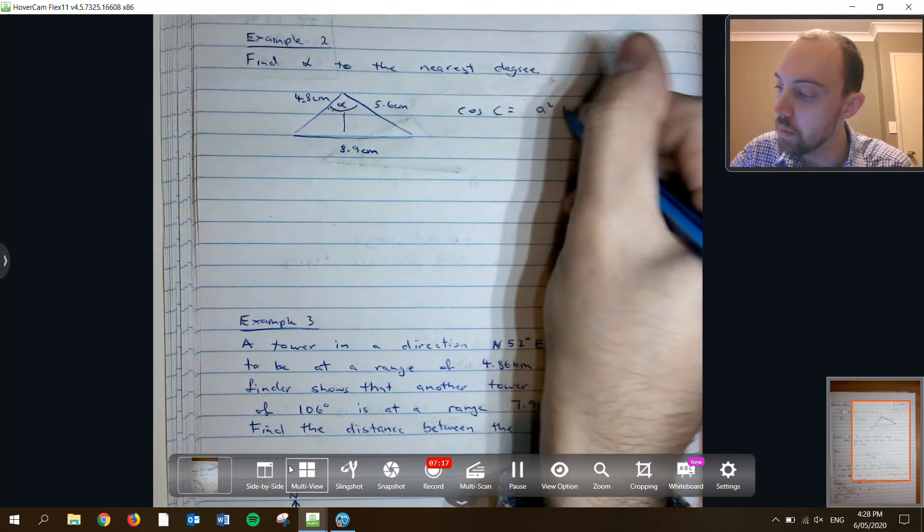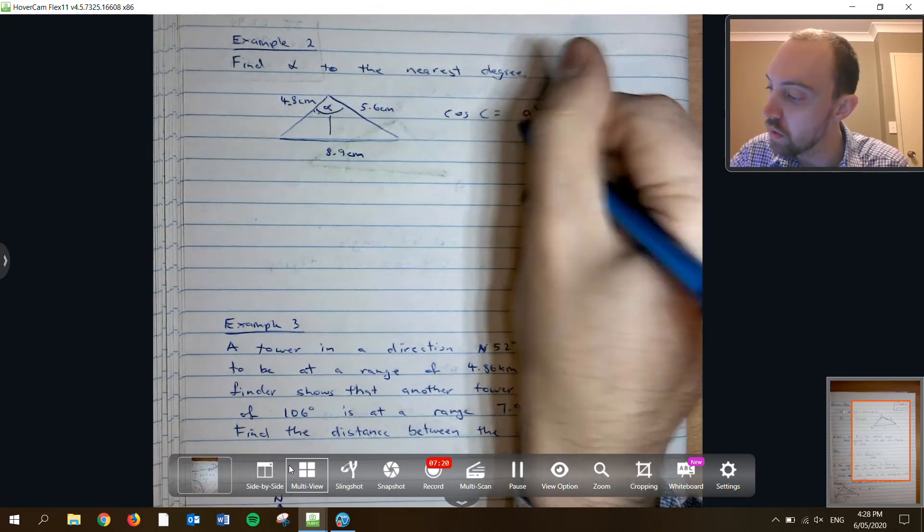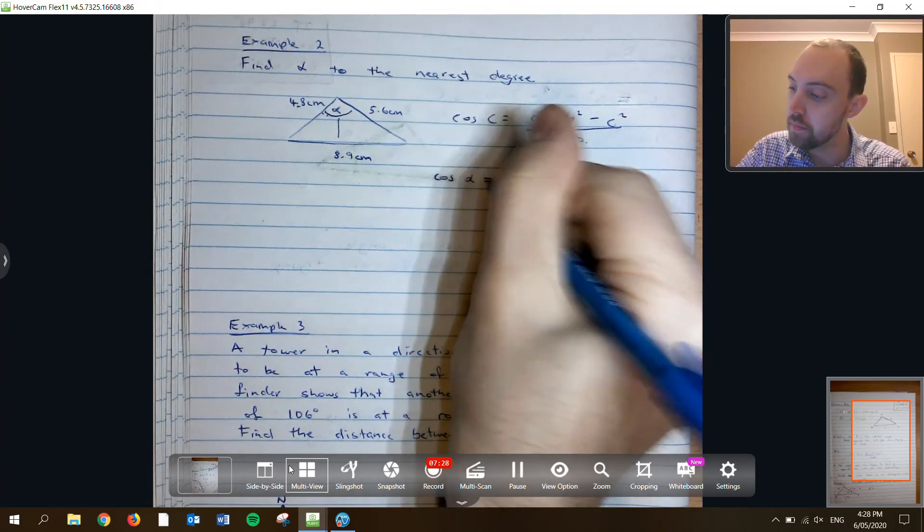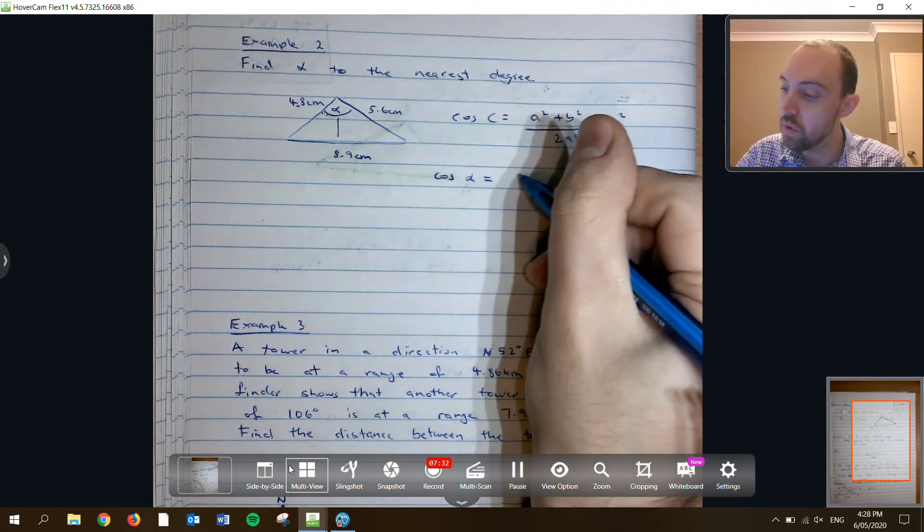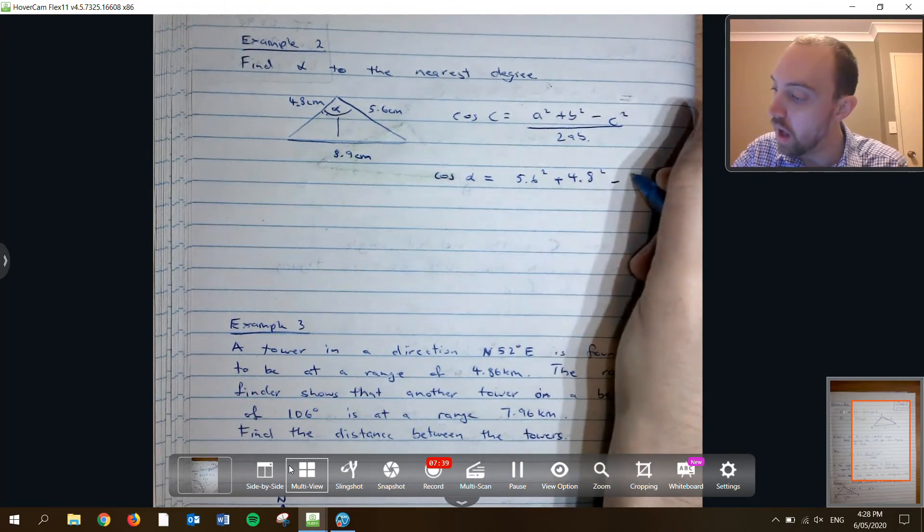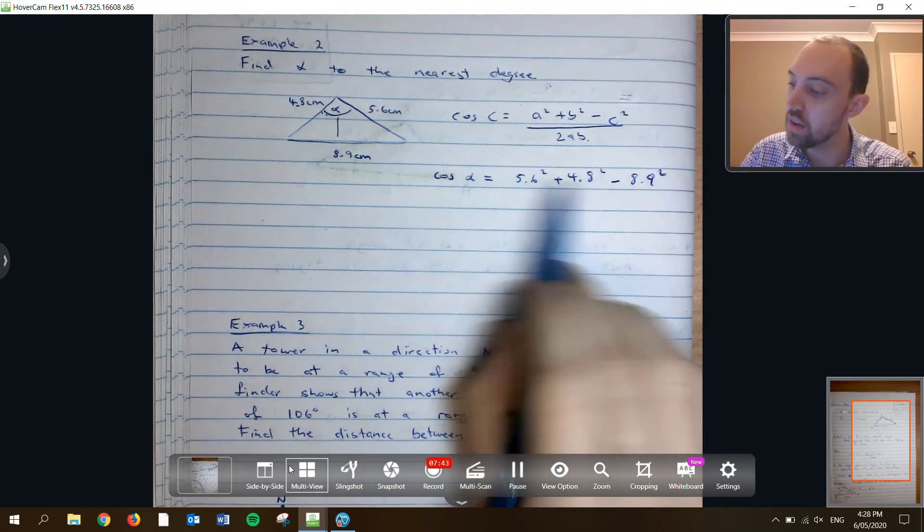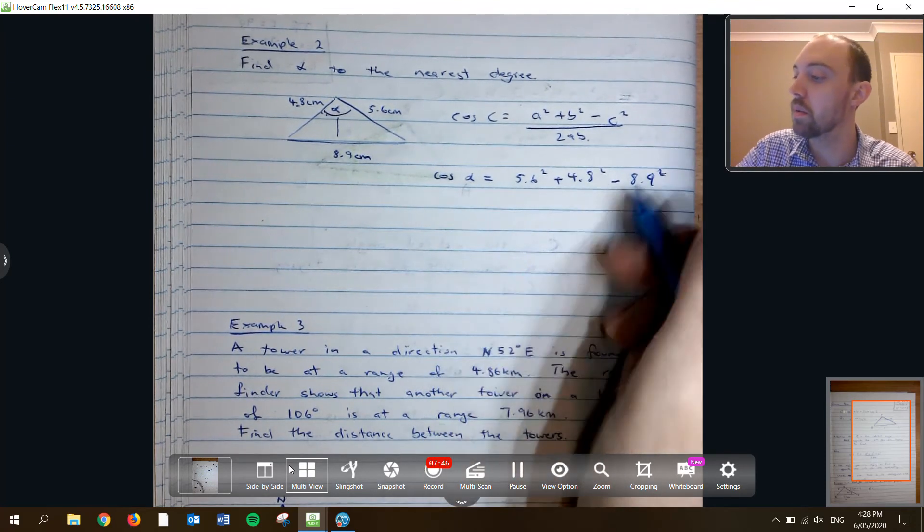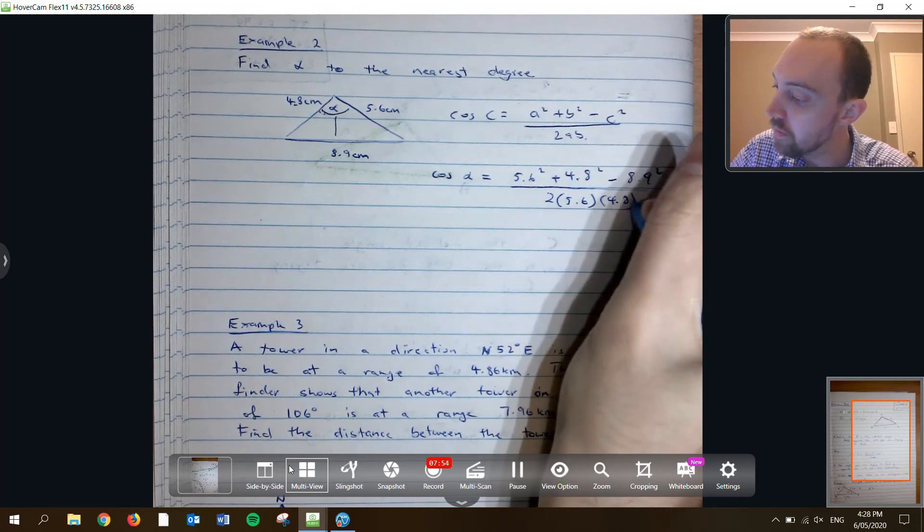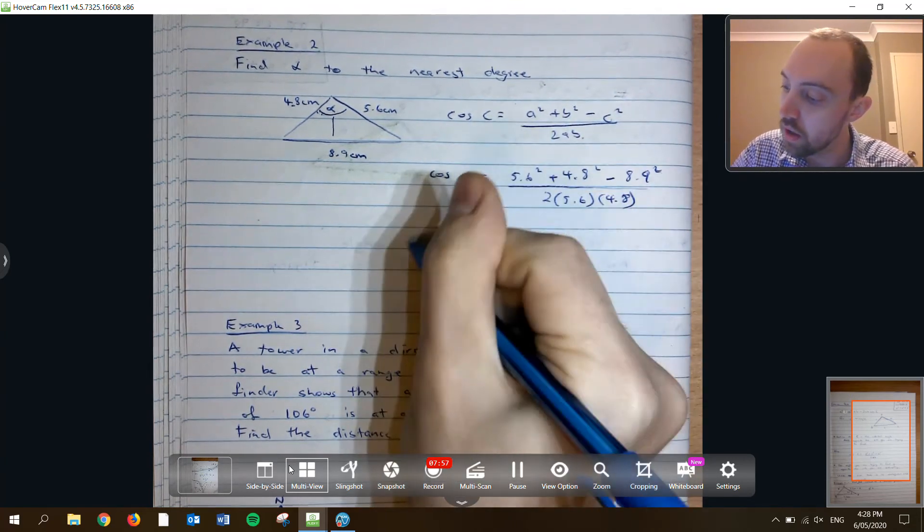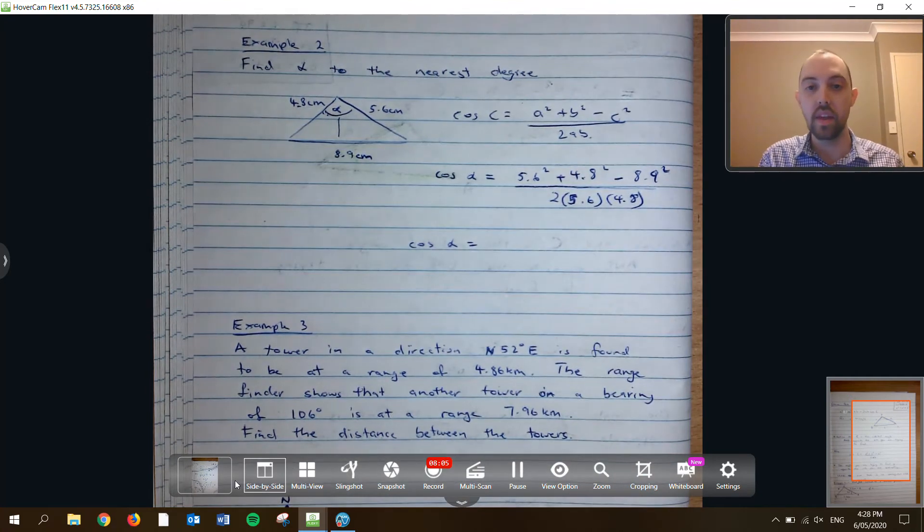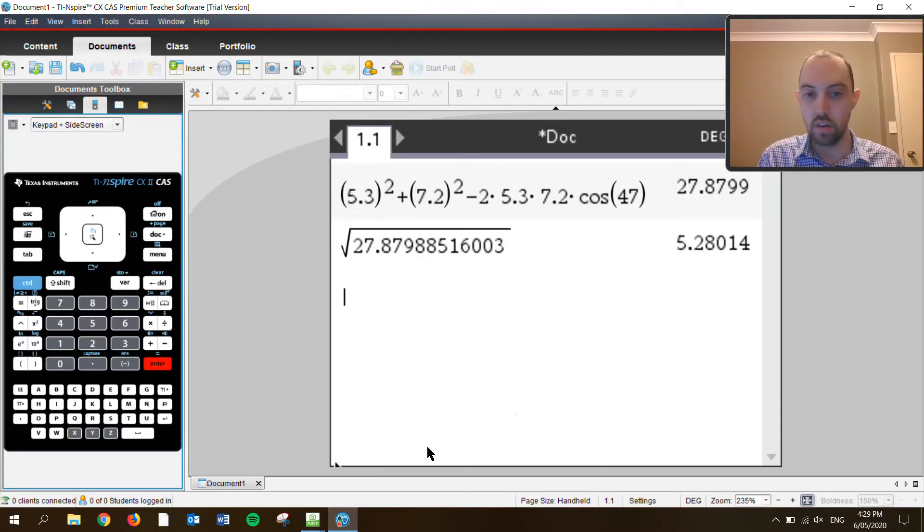The angle here is opposite the 8.9. So I'm going to do 5.6 squared plus 4.8 squared, take 8.9 squared. Got to pay attention to that. So I'm taking the 8.9. 2 times 5.6 times 4.8. And assuming we've done this correctly, we should get a value that is less than 1 because of alpha.